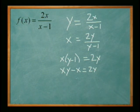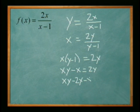Alright, so I'm going to get everything to the left side here. xy minus 2y minus x equals 0. Now I'm going to factor out the y here in the first two terms.